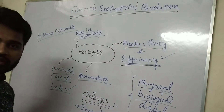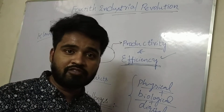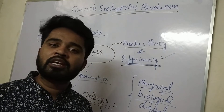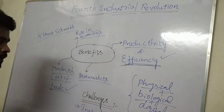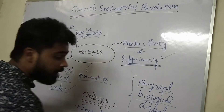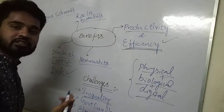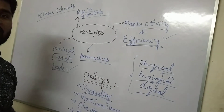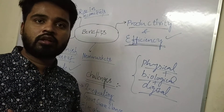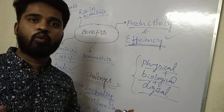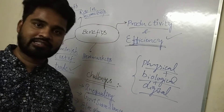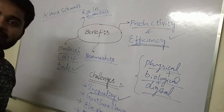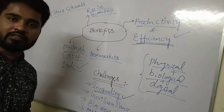Coming to the challenges of the Fourth Industrial Revolution — it is posing challenges to social, political, and economic structures. The first and foremost challenge is that some economists apprehend that this revolution would widen the gap between the rich and poor, because only those who have the required skills will benefit from it.